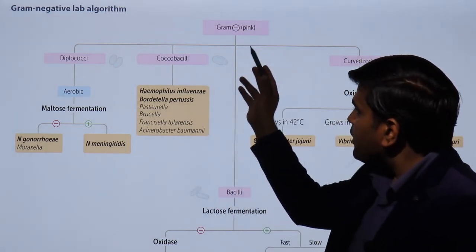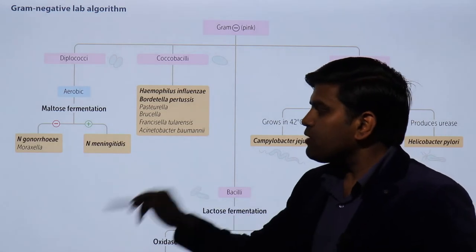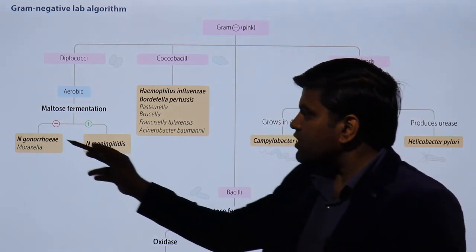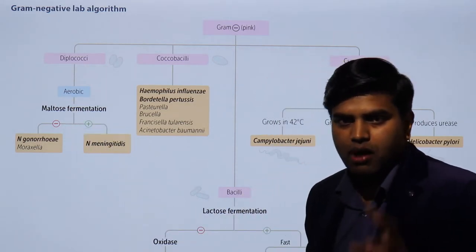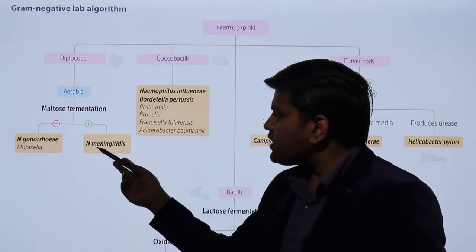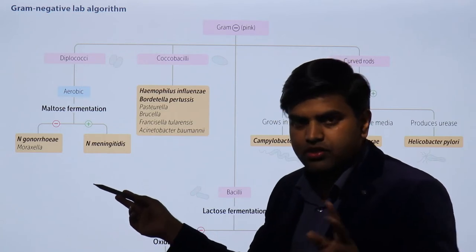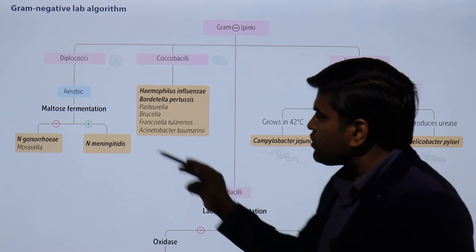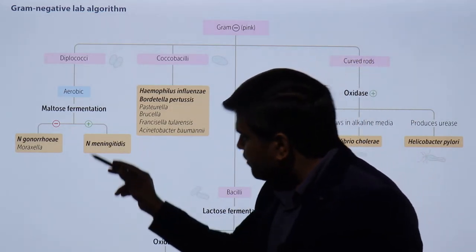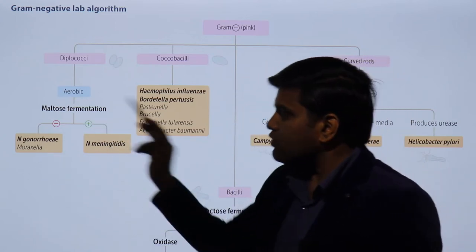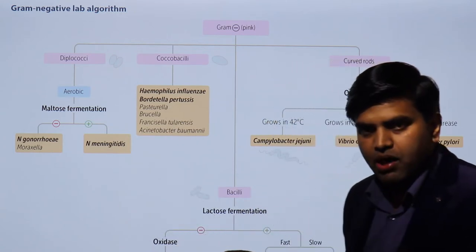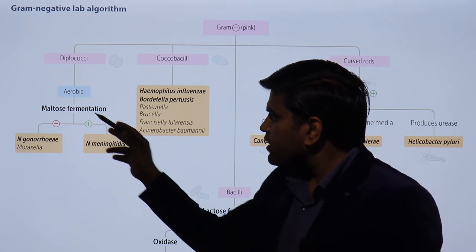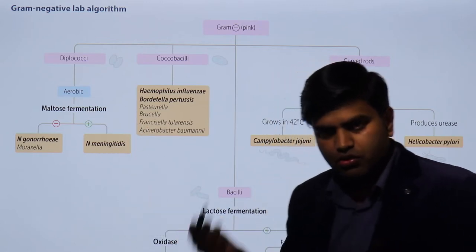Gram-negative cocci are only a few: Neisseria gonorrhoeae, Neisseria meningitidis, and Moraxella. They are both diplococci and aerobic organisms. We can differentiate Neisseria meningitidis from Neisseria gonorrhoeae by the maltose fermentation test. Both gonorrhoeae and meningitidis can ferment glucose, but only Neisseria meningitidis can ferment maltose. So the differentiation point is maltose fermentation — Neisseria gonorrhoeae and Moraxella cannot ferment maltose.